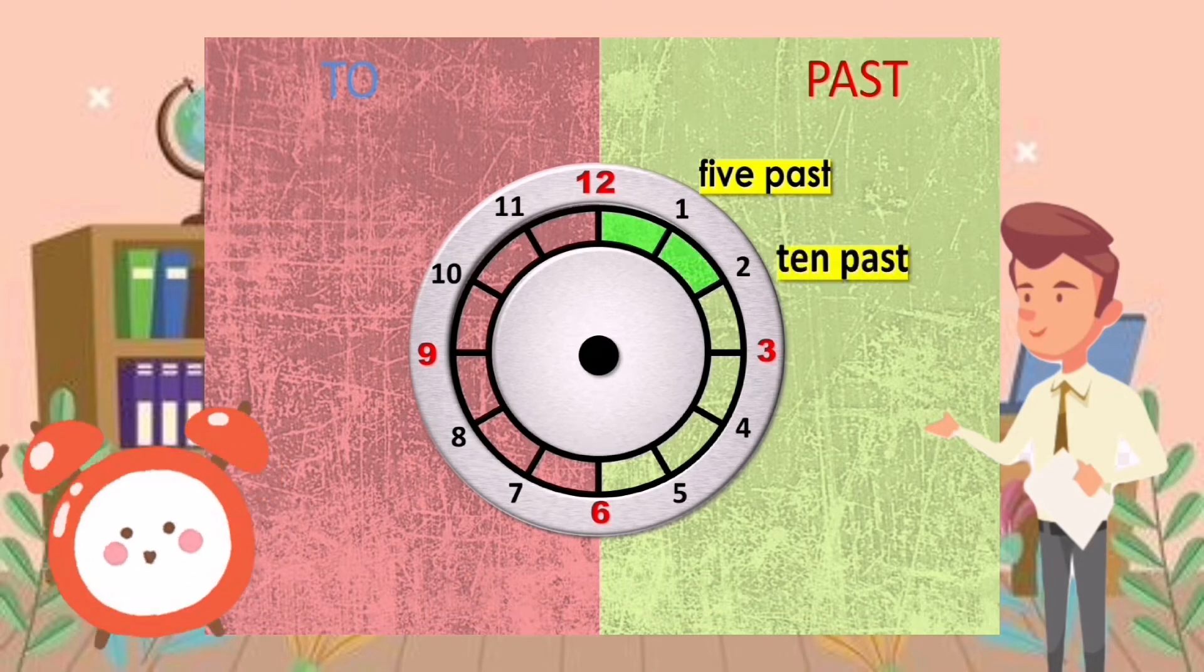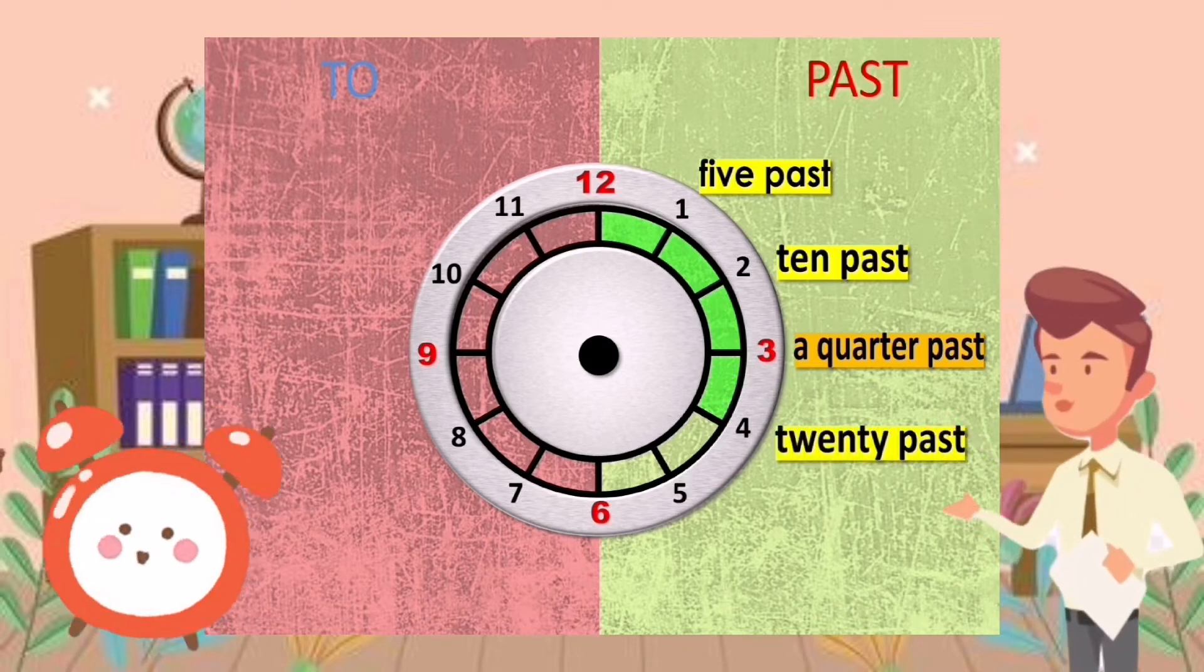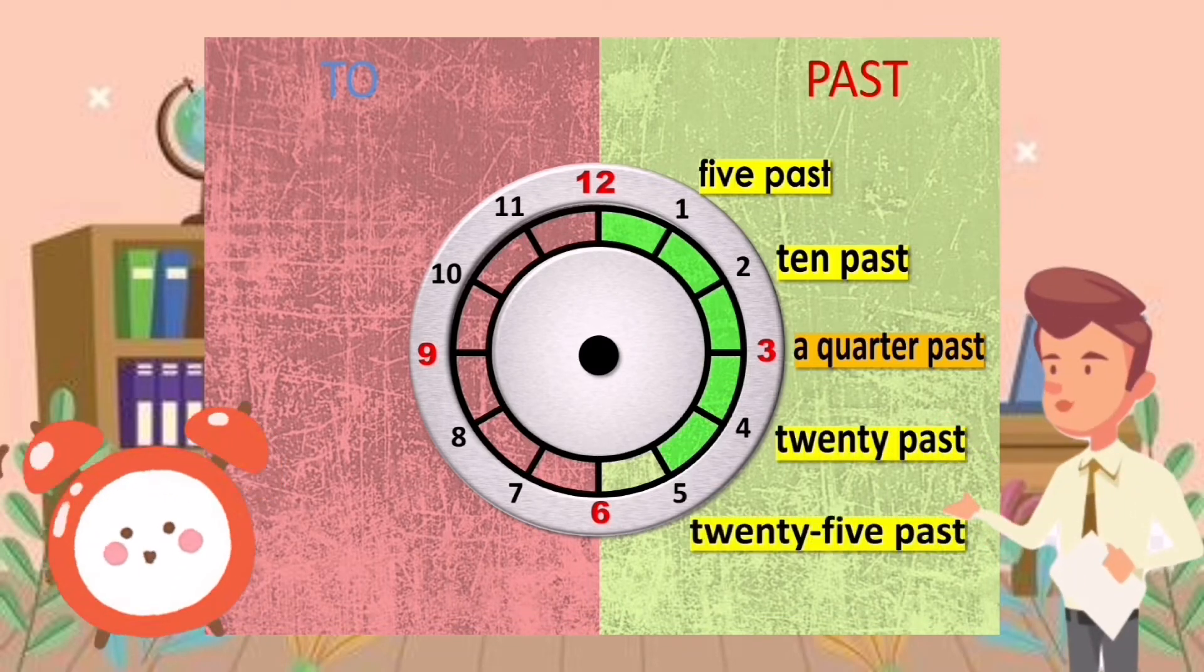At number two, ten past. At number three, a quarter past. At number four, twenty past. At number five, twenty-five past.